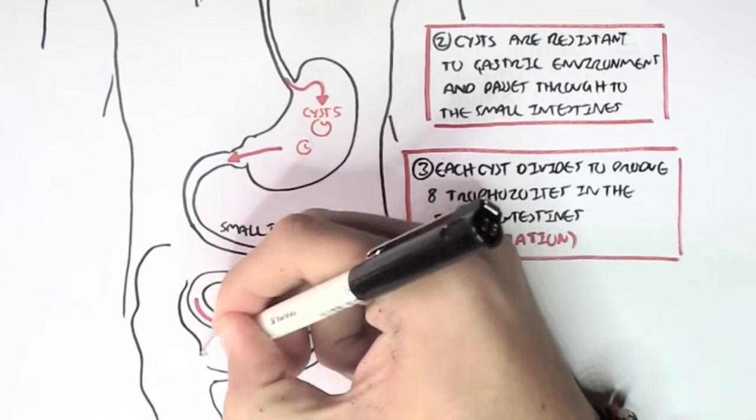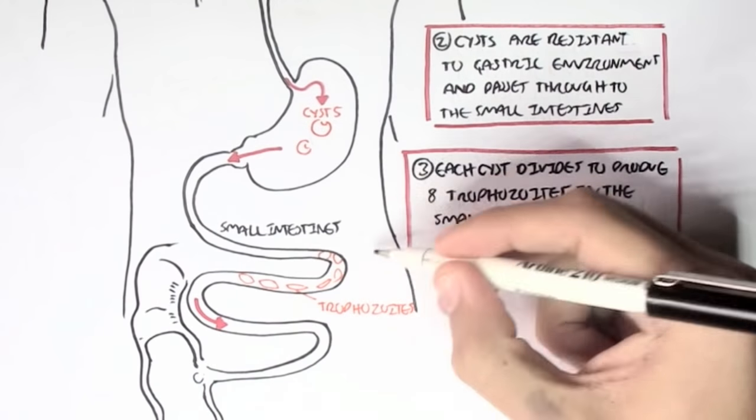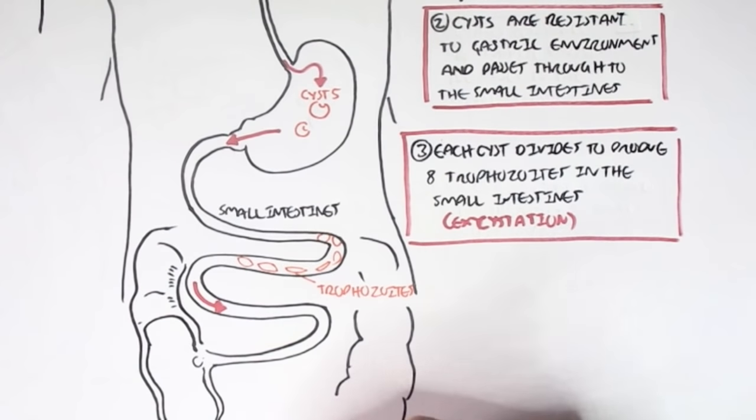These trophozoites will then move into the colon of the large intestines, where it will establish colonization.